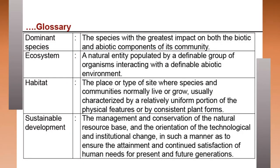Dominant species in an ecosystem are the species with the greatest impact on both the biotic and abiotic components of their community. An ecosystem is a natural entity populated by a definable group of organisms interacting with a definable environment. Habitat is the place or type of site where species and communities normally live or grow. Sustainable development is the management and conservation of the natural resource base and the orientation of technological and institutional change in such a manner as to ensure continued satisfaction of human needs for present and future generations.